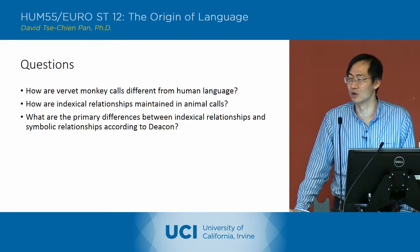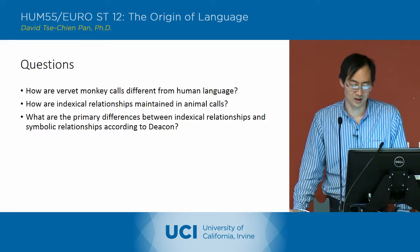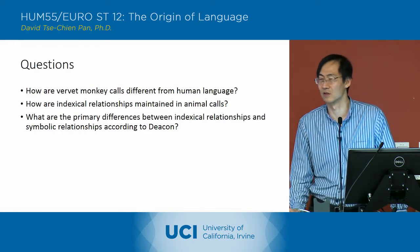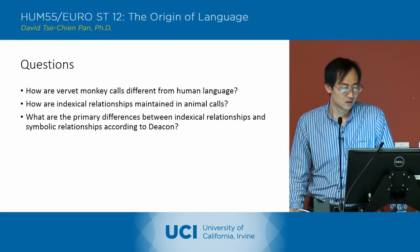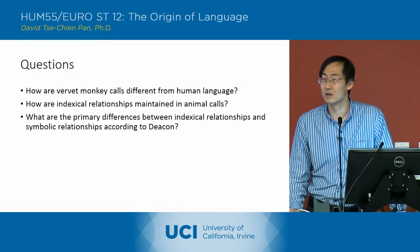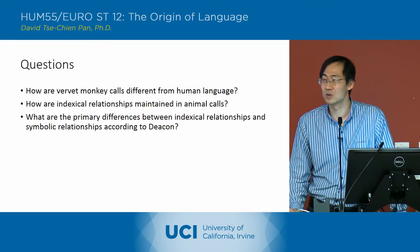Sign and object — S and O — that was what he had on the diagram. Other questions up to this point?